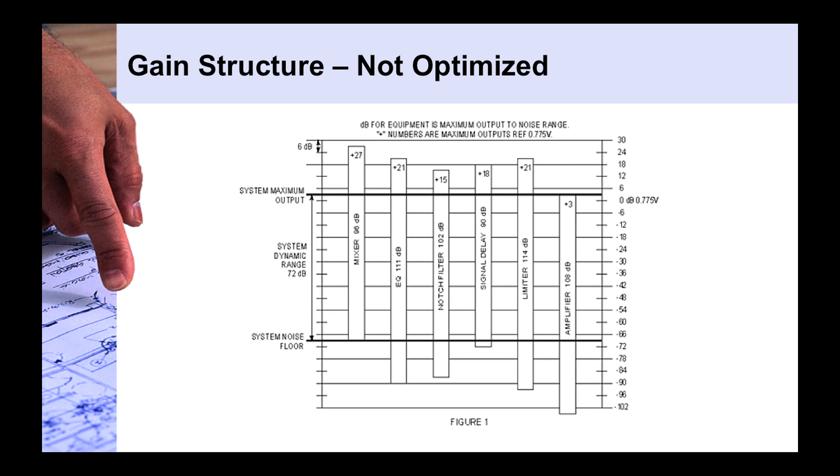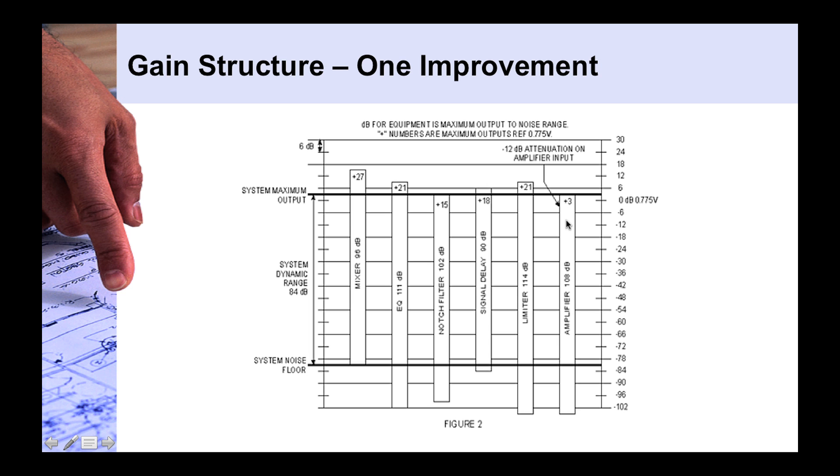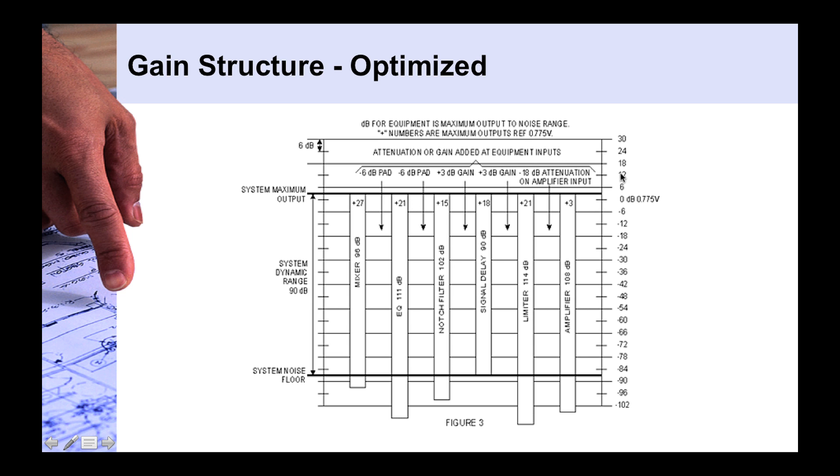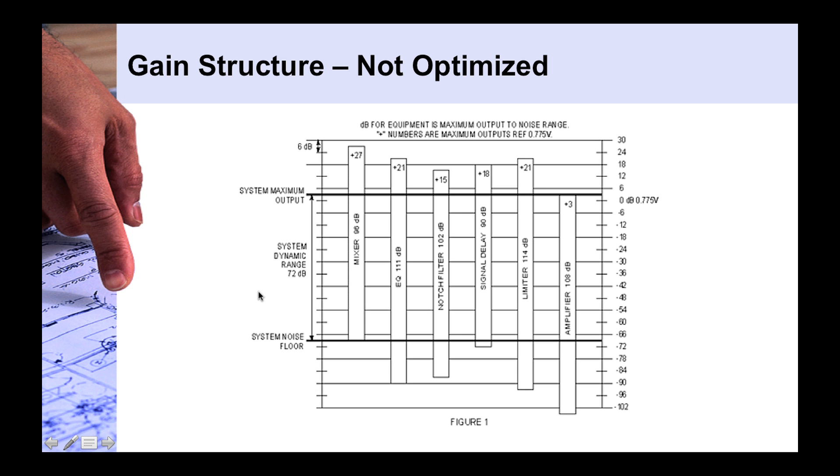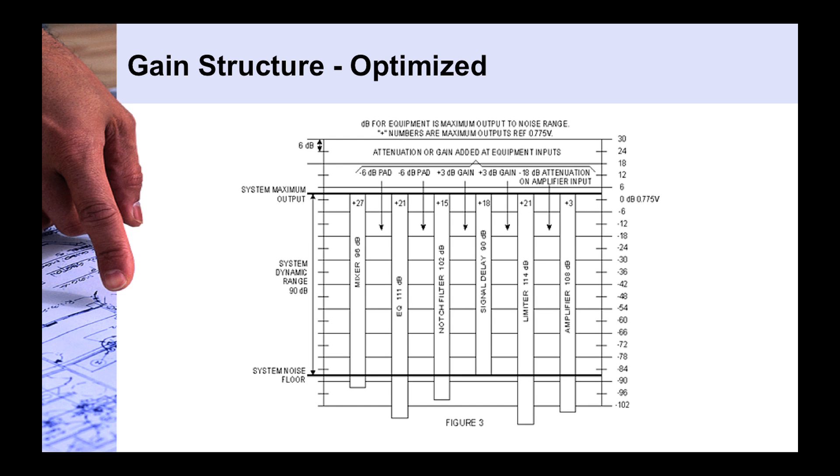So again, if we go back, we started with a system dynamic range of 72 dB from its maximum output to its noise floor. Make one adjustment at the input of the amp here, and here in this case it's a 12 dB attenuation. And then that increases our system dynamic range to 84 dB. And if we optimize everything going across the chain, now we have a system dynamic range of 90 dB. So going from an unoptimized of 72 to an optimized gain structure of 90, we've gained 18 dB of more signal compared to noise. So it's 18 dB less noisy.